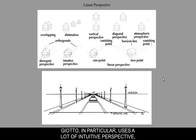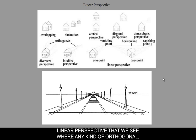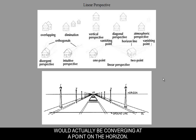Giotto, in particular, uses a lot of intuitive perspective. He starts to intuitively understand one-point linear perspective, where any orthogonal line that's supposed to be parallel to another line would actually converge at a point on the horizon.